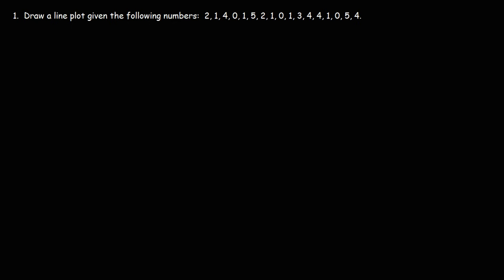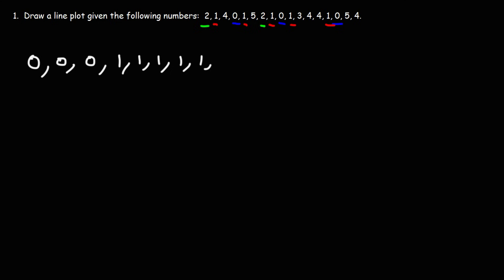Draw a line plot given the following numbers. One of the first things we should do is arrange the numbers in order. So let's start with the lowest number, which is zero. We have three zeros. Next on the list is one, and we have a total of five ones. Next we have two, and I've counted two twos.